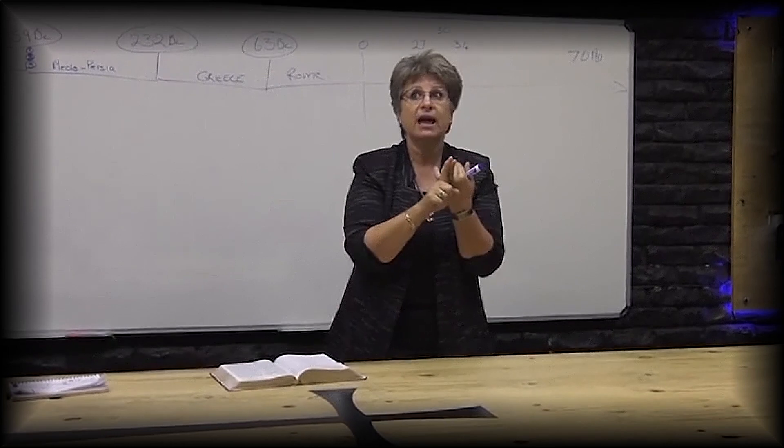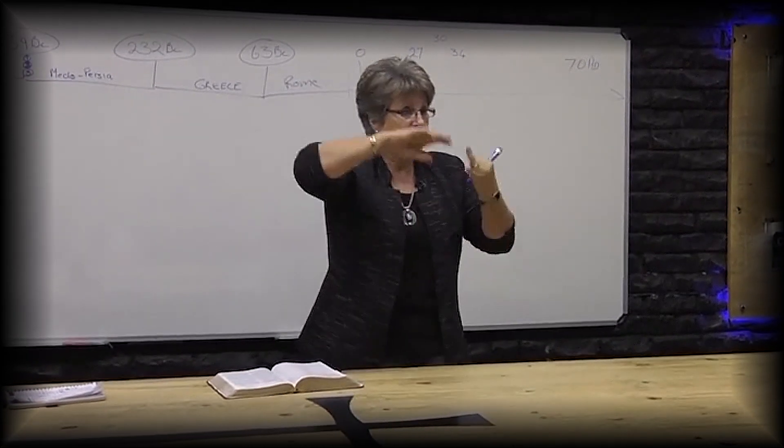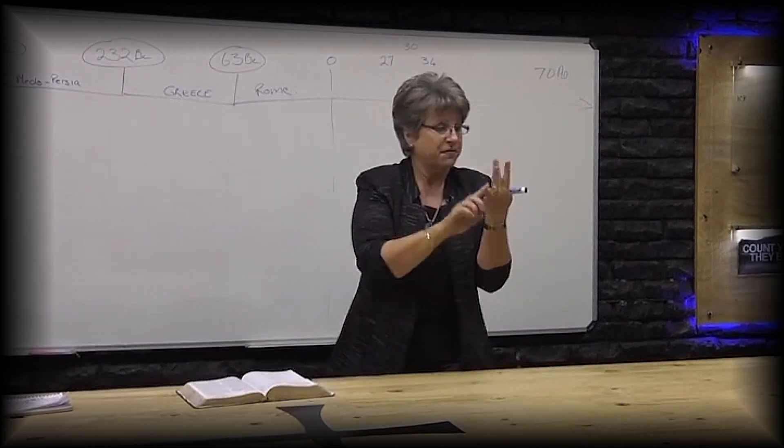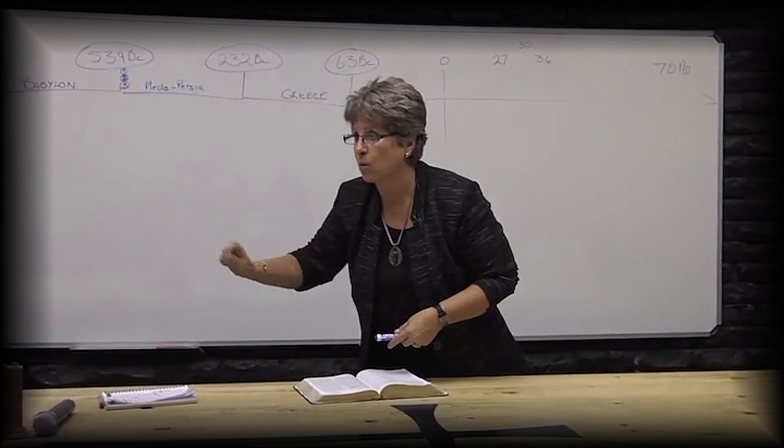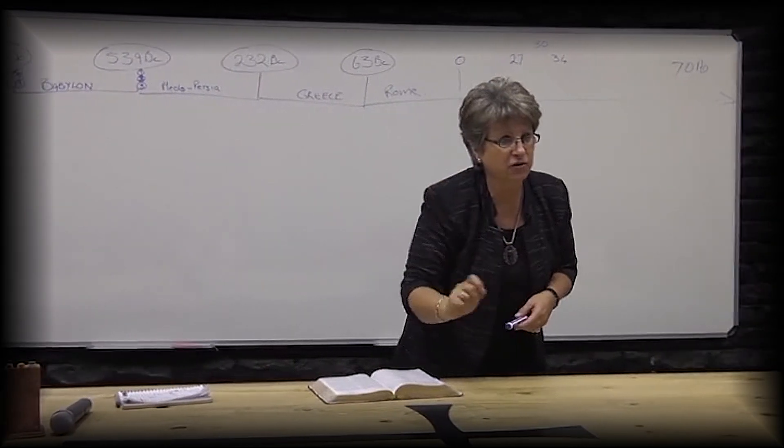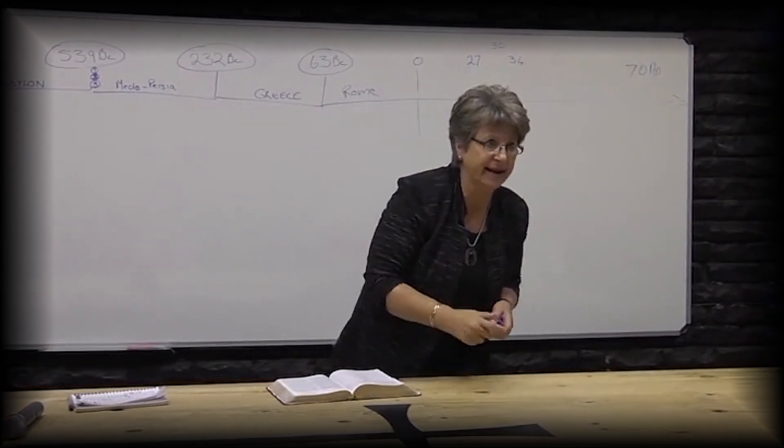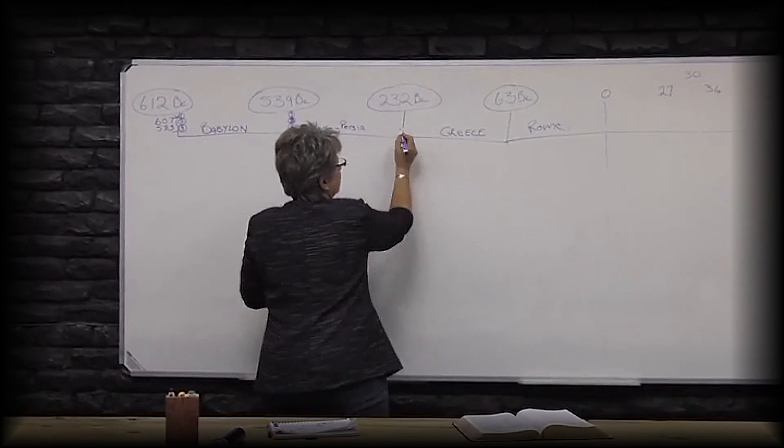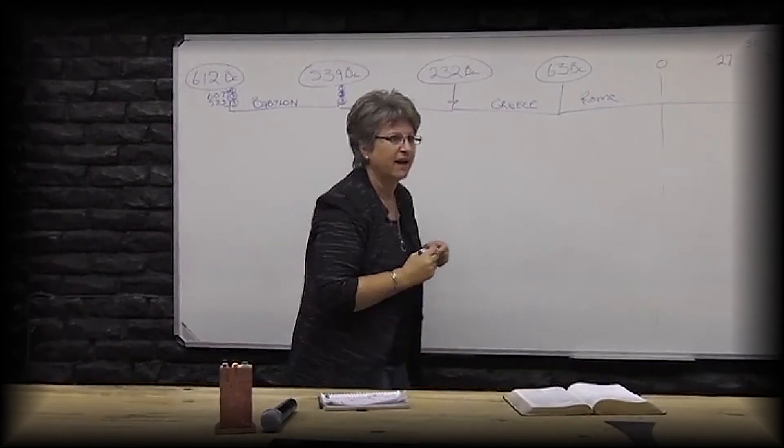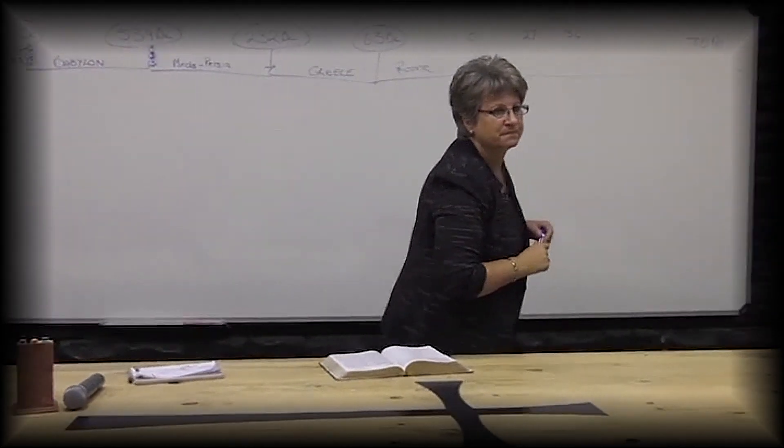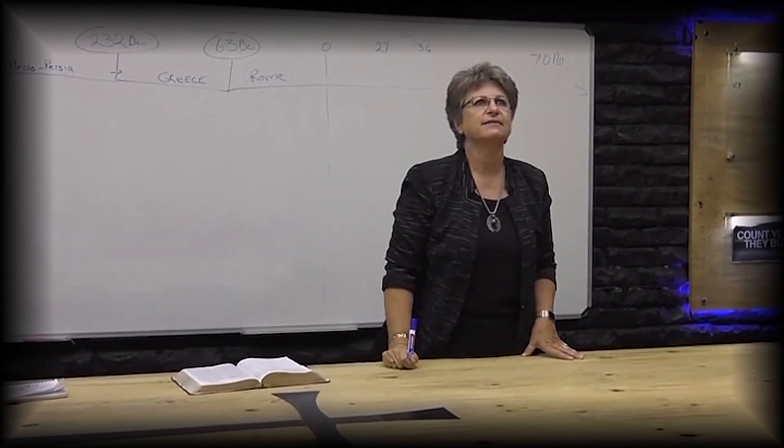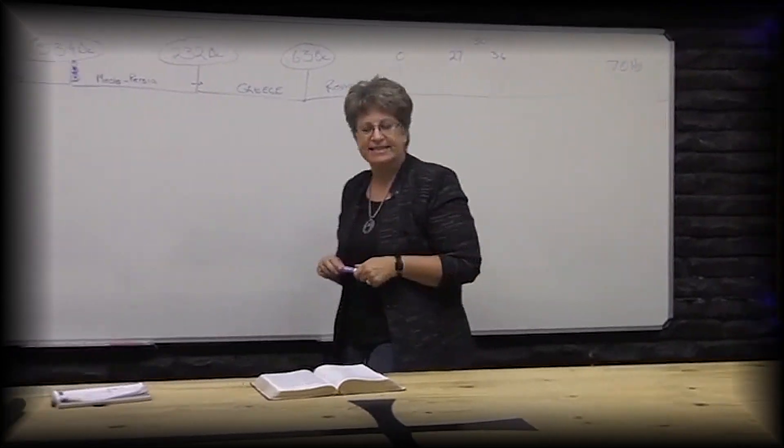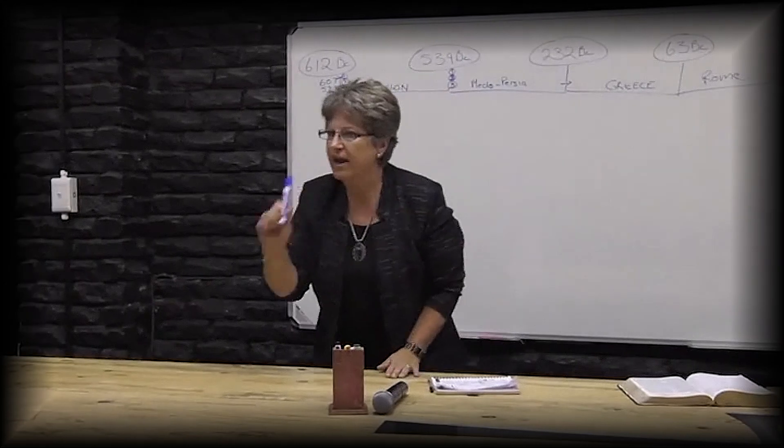Chapter four: the king had another dream of this big tree that was chopped down and the king became like an animal. Chapter five was the handwriting on the wall that said you have been weighed and found too light. Chapter six was Daniel in the lion's den.